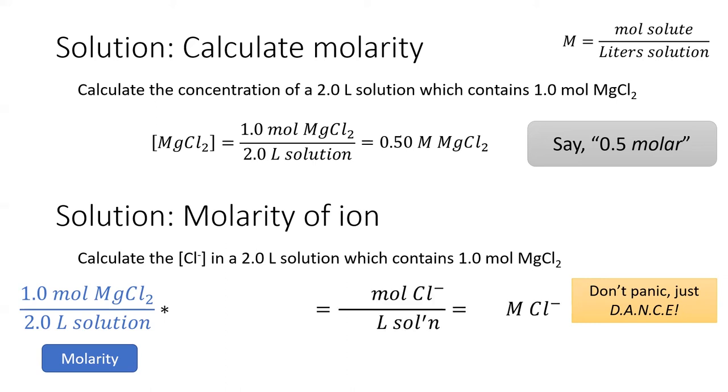Our ending units need to be moles of chloride per liter of solution. So our conversion factor needs to convert between magnesium chloride and chloride.